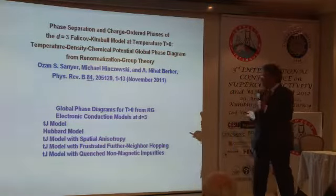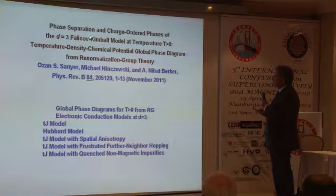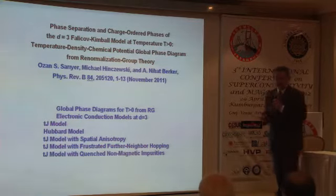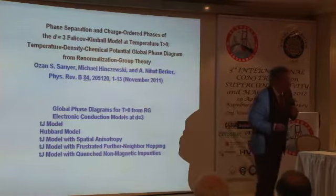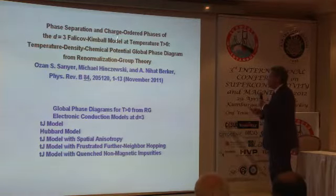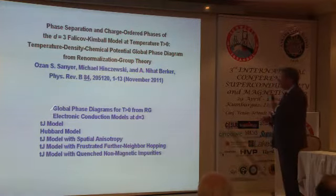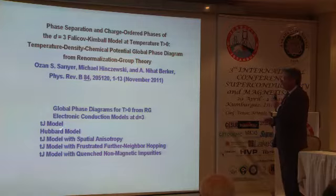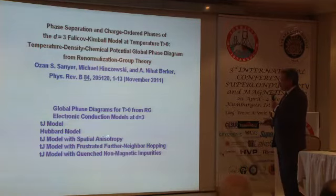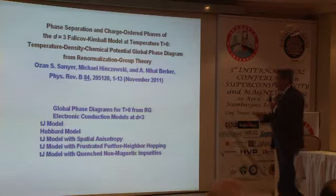whom I have trained in Turkey since coming back 12 years ago after 32 years in the United States. Basically, what we've done — I'm going to start with the solution of the Falicov-Kimball model, which is an electronic model. We have a phase diagram approach, we use renormalization group theory. After that, we'll move on to the TJ model, the Hubbard model, spatial anisotropy, frustration, and non-magnetic impurities.